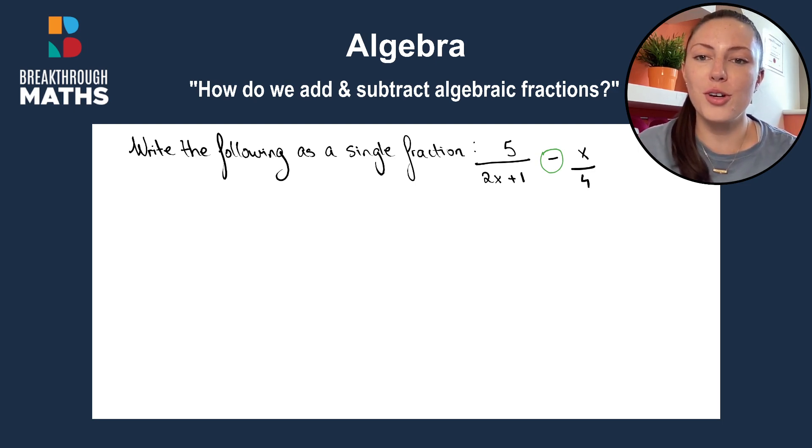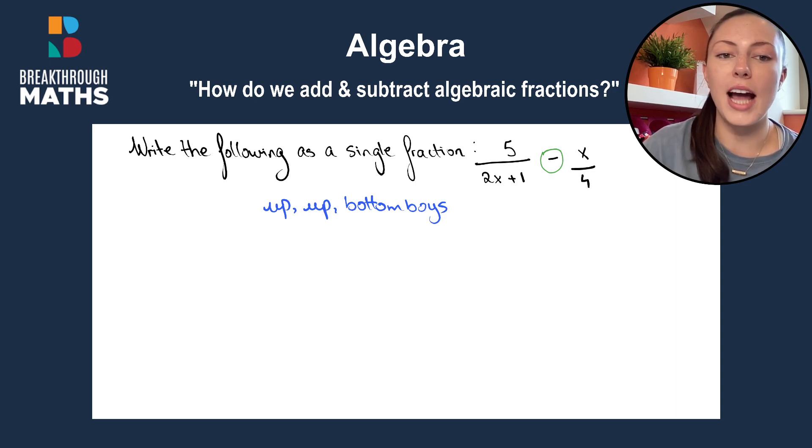So the rule that we use is up, up, bottom boys. Now I'll explain what that means. It means we draw three arrows: up, up, and one connecting the bottom boys.